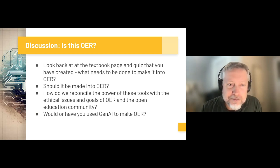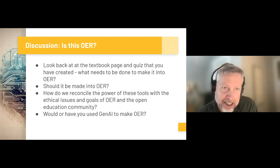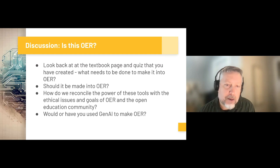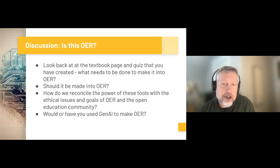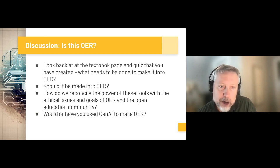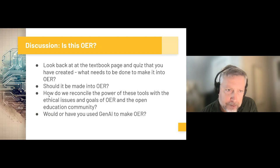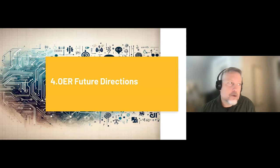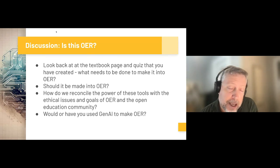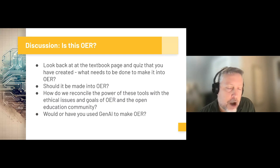Going back to the idea of the textbook section and the quiz you've created — I want to ask: are these ready to be published as OER? What would need to be done to make this OER? The follow-up question is: should it be made into OER? Do we have the rights to take this content generated by Gen AI and turn it into an openly shared resource? And how do we reconcile the power of these tools with the ethical issues and goals of OER and the open educational community? Please take a minute and drop your responses to those first two questions into the chat, or jump on the mic.